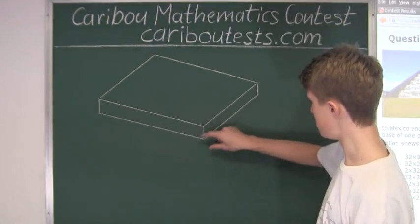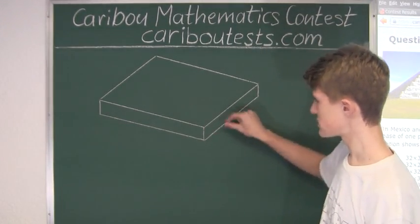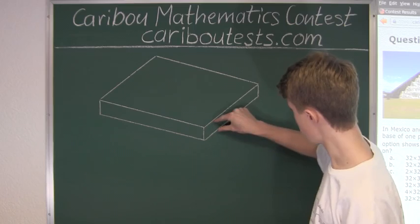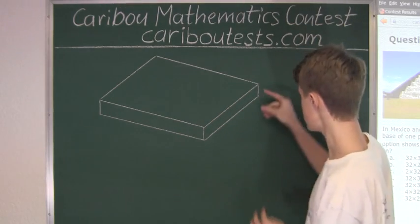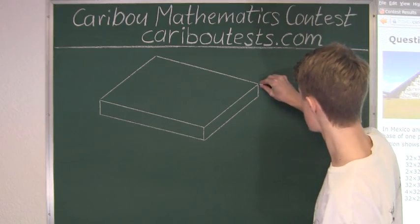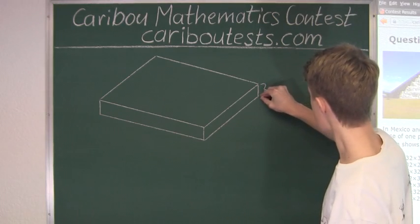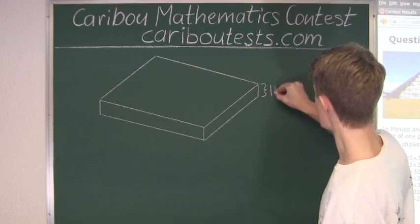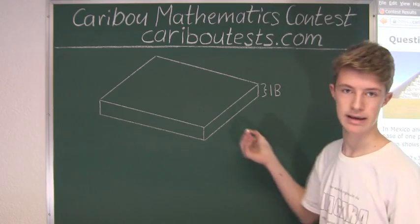Now we know that the base has just a layer which is made of blocks. So therefore we know that this height must be one block. And we will write the blocks as a capital B.